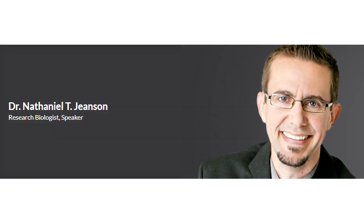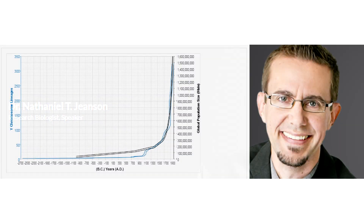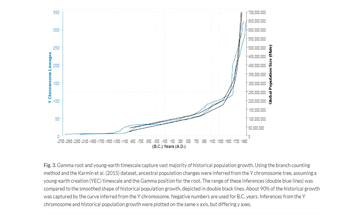Dr. Nathaniel Jensen was determined to see how population growth would match up with splits in lineages in Y chromosome genetic clock data. This was possible because this type of genetic data can be analyzed in a tree-like structure.